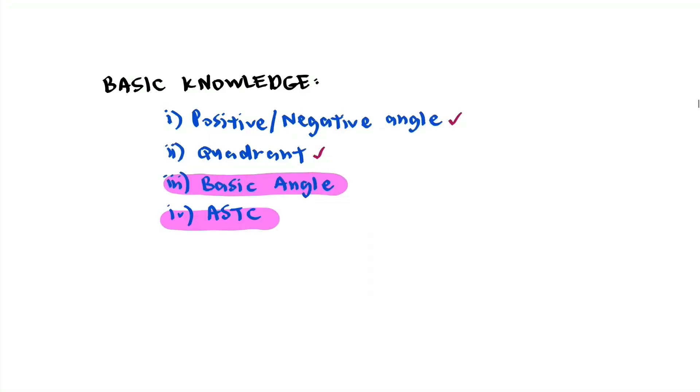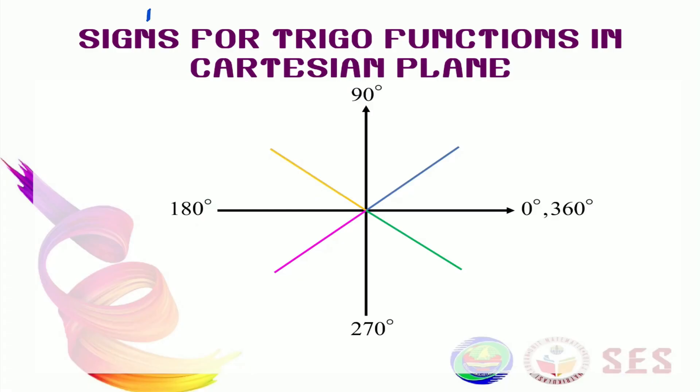Now, let's see the fourth item that we need for this video. ASTC. ASTC is one of the way to remember in which quadrant does the basic functions, that is sine, cos and tan, becomes positive. Starting with quadrant number 1, it's A. Quadrant number 2, it's S. Quadrant number 3, it's T. Quadrant number 4, it's C.